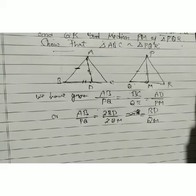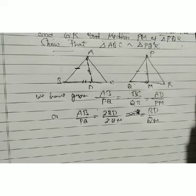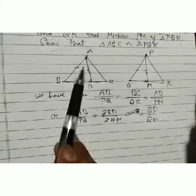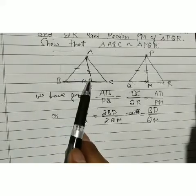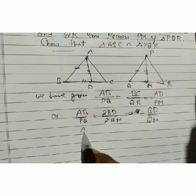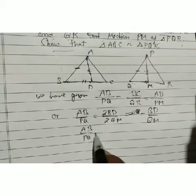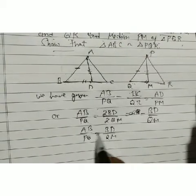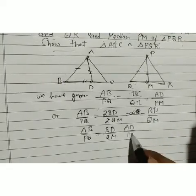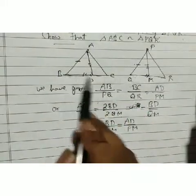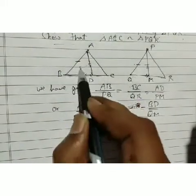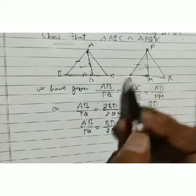Now in triangles ABD and PQM, we have AB/PQ = BD/QM = AD/PM. All three corresponding sides are in proportion.